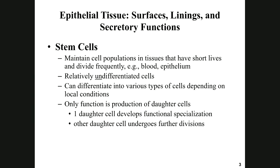When discussing epithelial tissue, stem cells are extremely important. A stem cell is an undifferentiated cell — it doesn't have an identity yet. What a stem cell really does is undergo mitosis and make all the cells the body needs. Every minute, millions of red blood cells die out of your 25 trillion, and stem cells in bone marrow replace them.